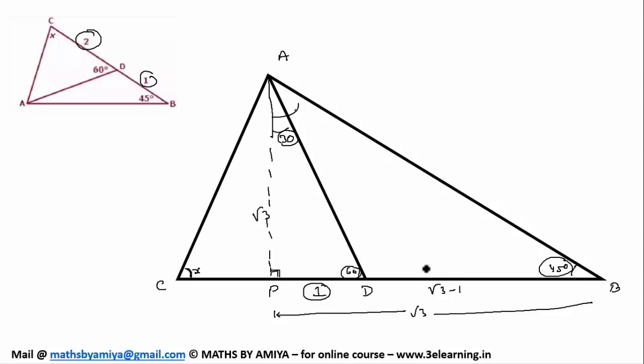Then suddenly I realized, boss, DB is nothing but 1. If your DB is nothing but 1, what it means? It means I have to convert into 1 by dividing root 3 minus 1. So I have to divide root 3 minus 1 every place.